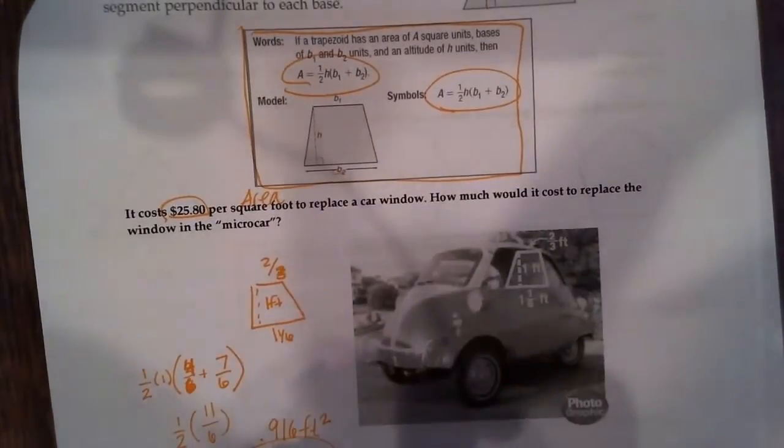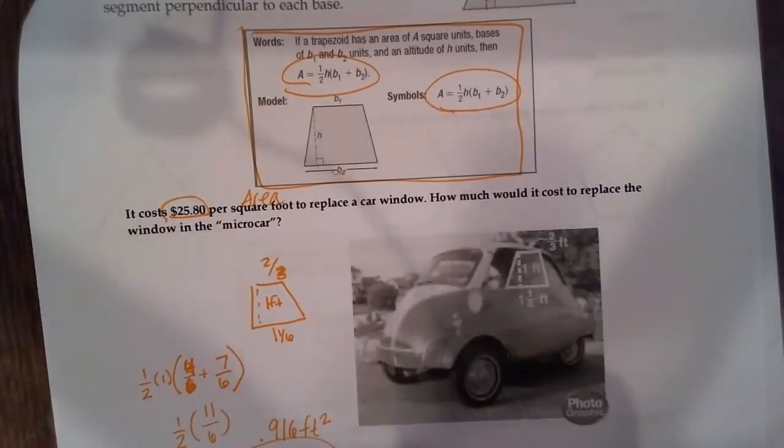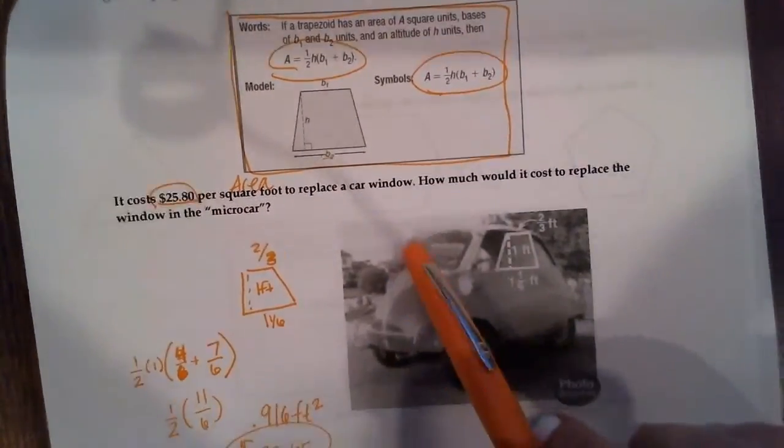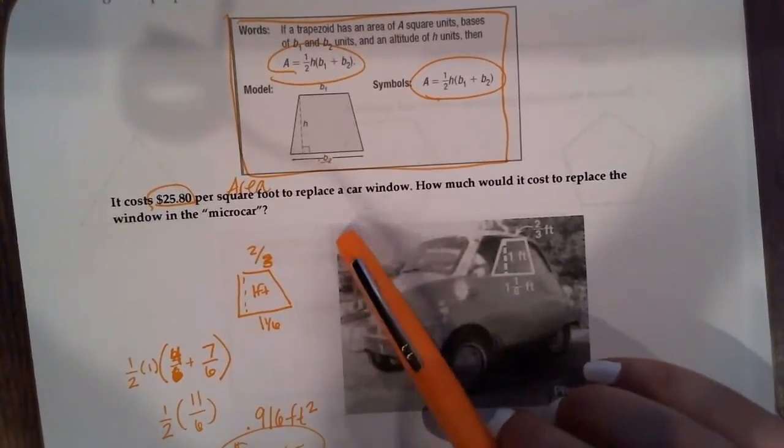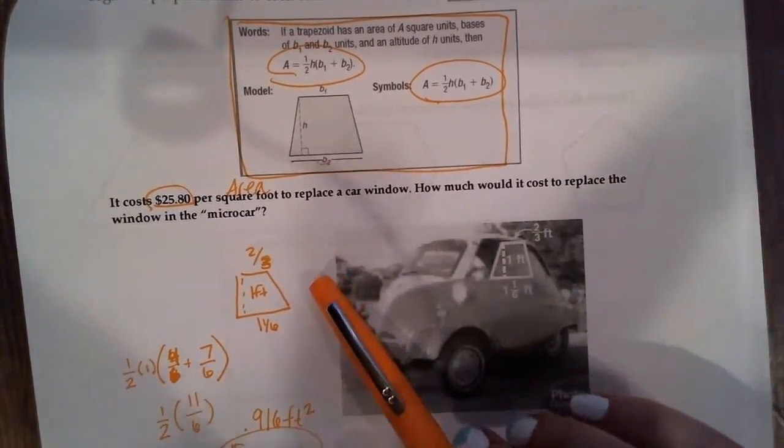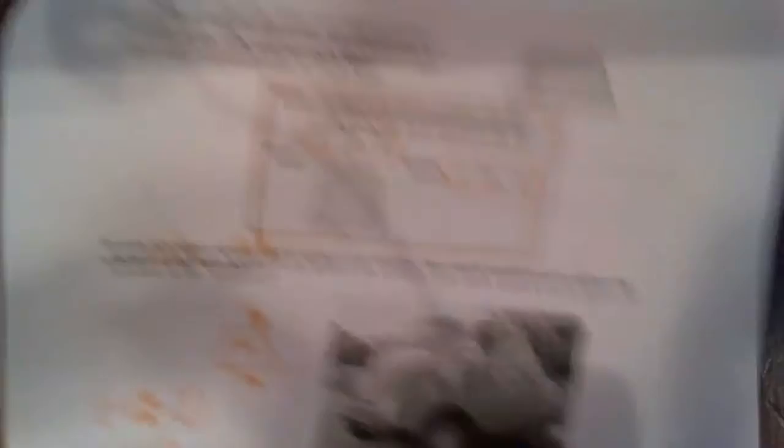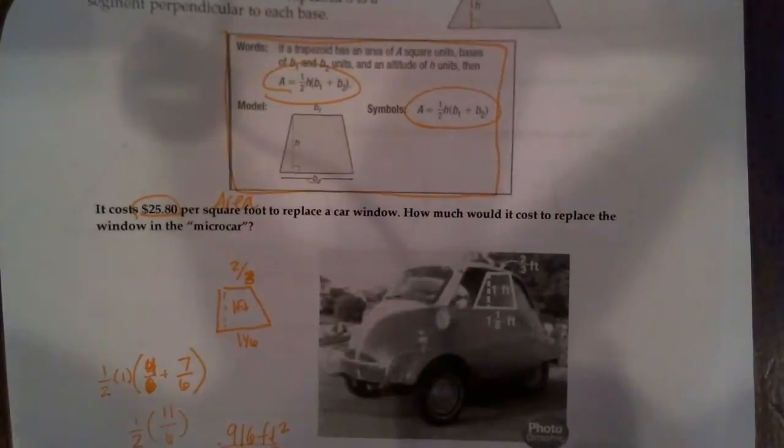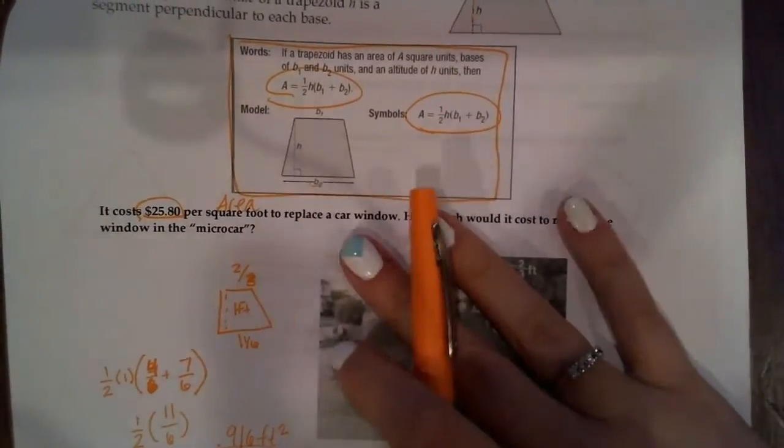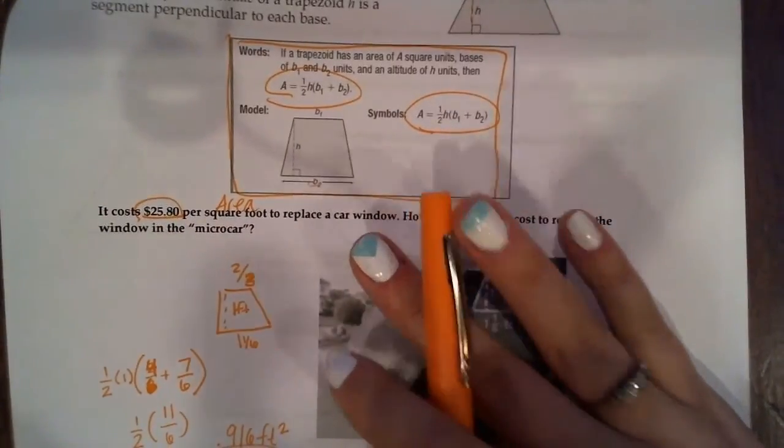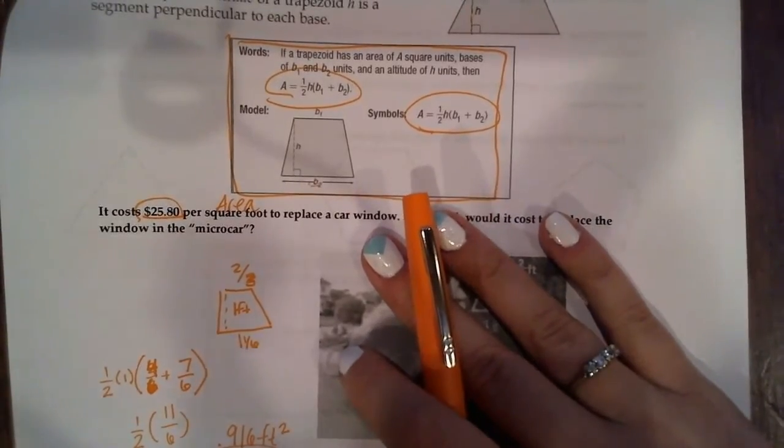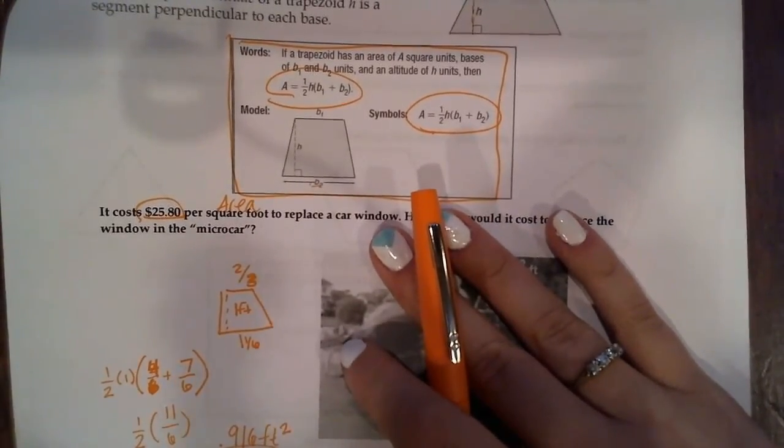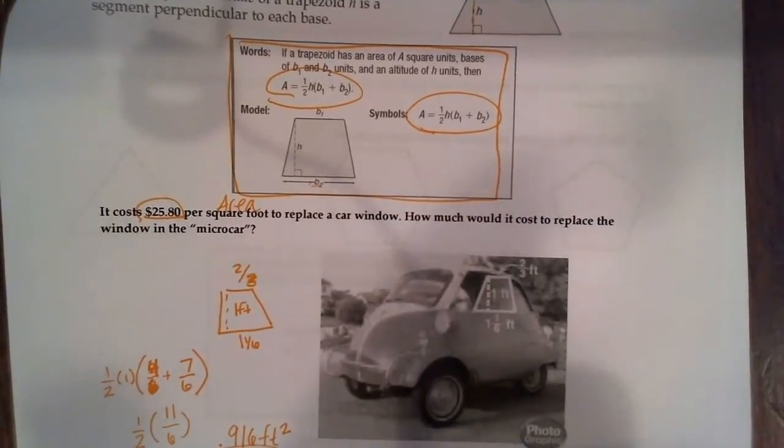I think this is probably something you have done before, maybe in middle school, but we're going to keep this theme going with polygons and area and measurements and all that. For our next section is areas of regular polygons. Good luck on your homework for this section. We'll Zoom to go over any questions you have for notes or the homework, and I will see you when I see you. Bye guys.